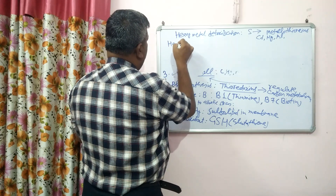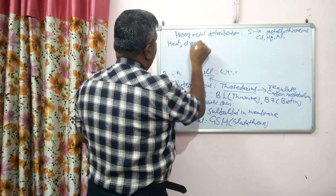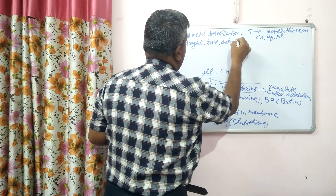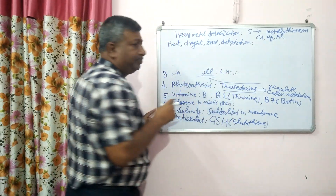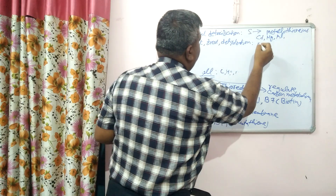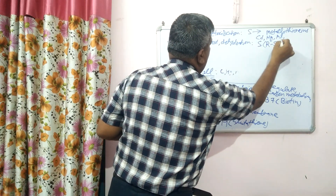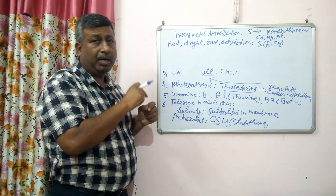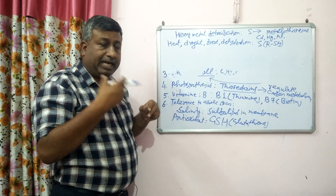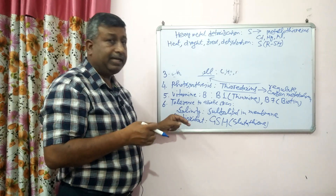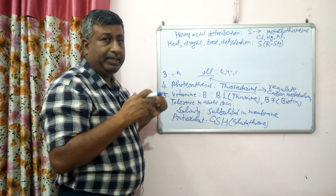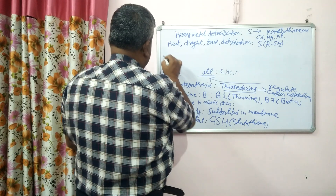Sulfur also provides tolerance against heat, drought, frost, and dehydration stress. Plants become tolerant to these stresses because sulfur is present in sulfhydryl (SH) groups, which help in this tolerance. So sulfur provides many types of abiotic stress tolerance — for salinity, aluminium toxicity, and heavy metals like copper, cadmium, and mercury.